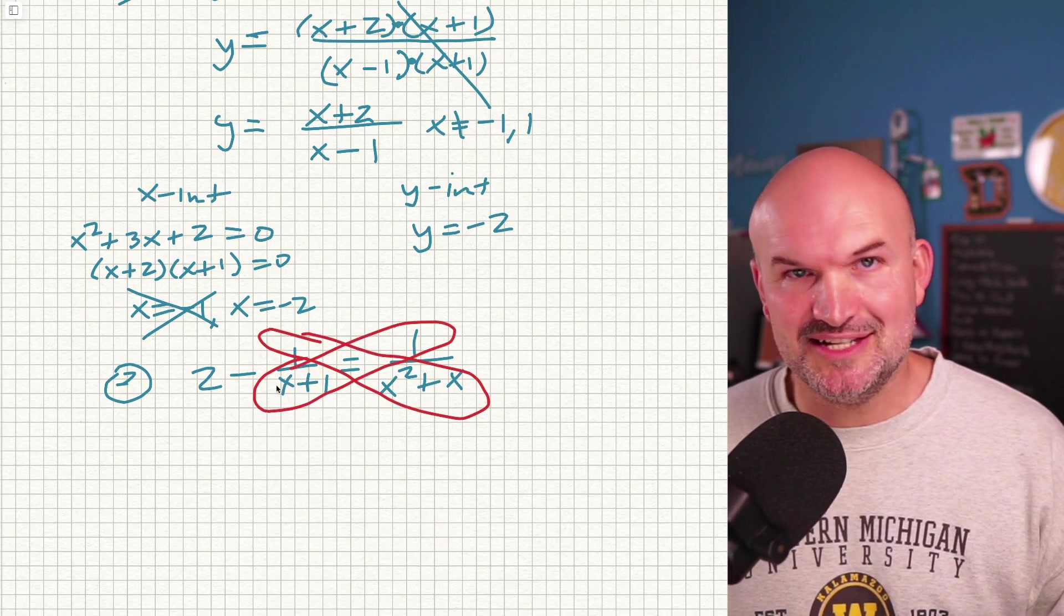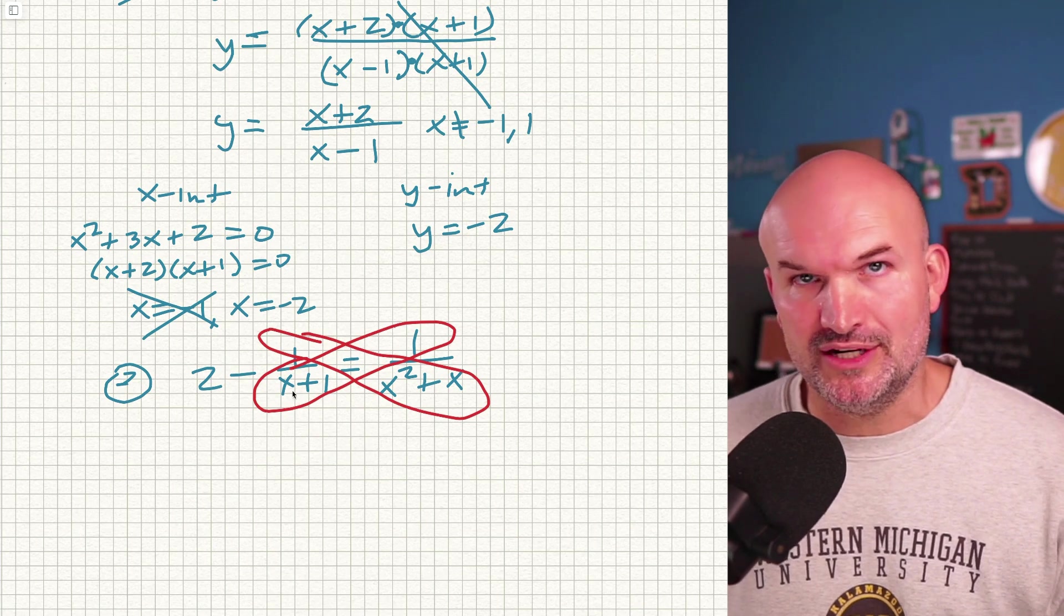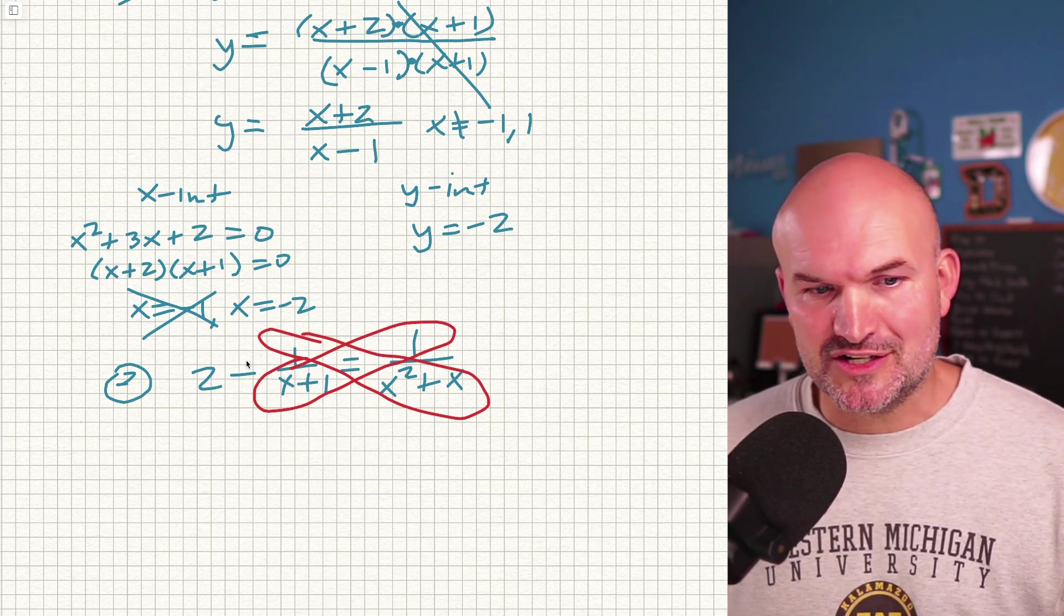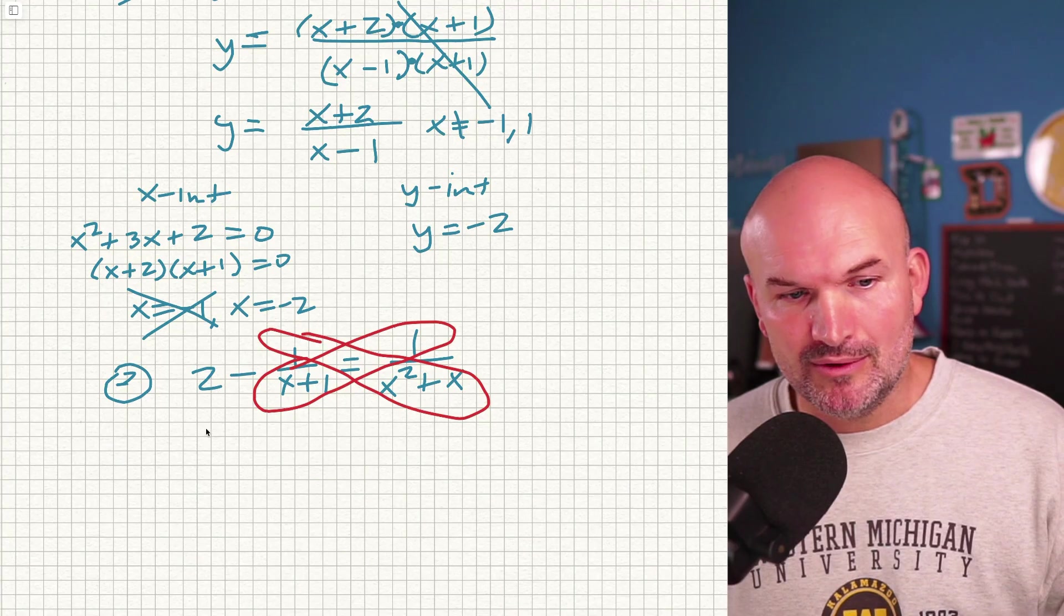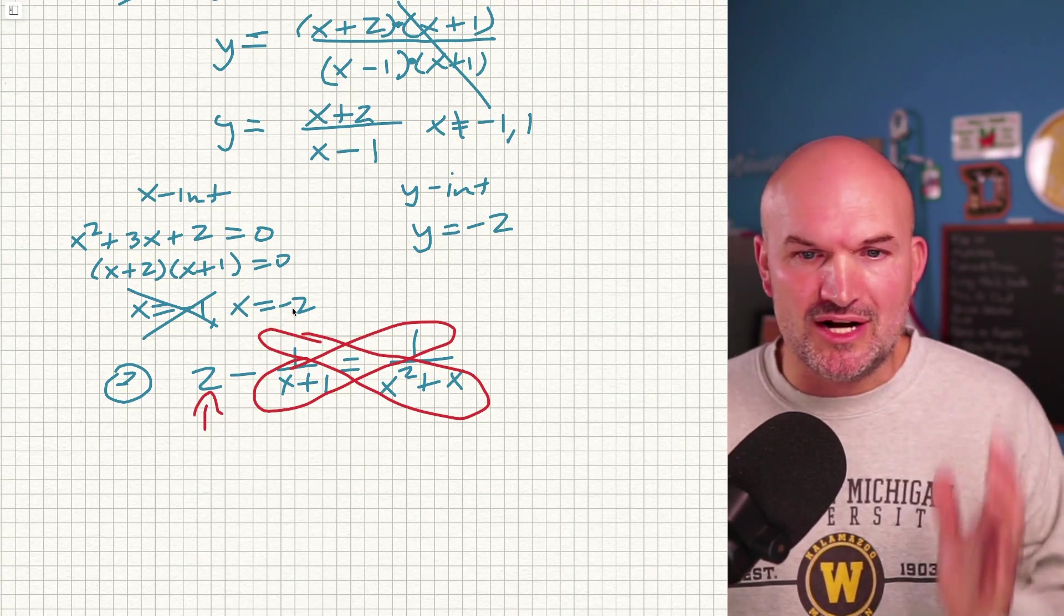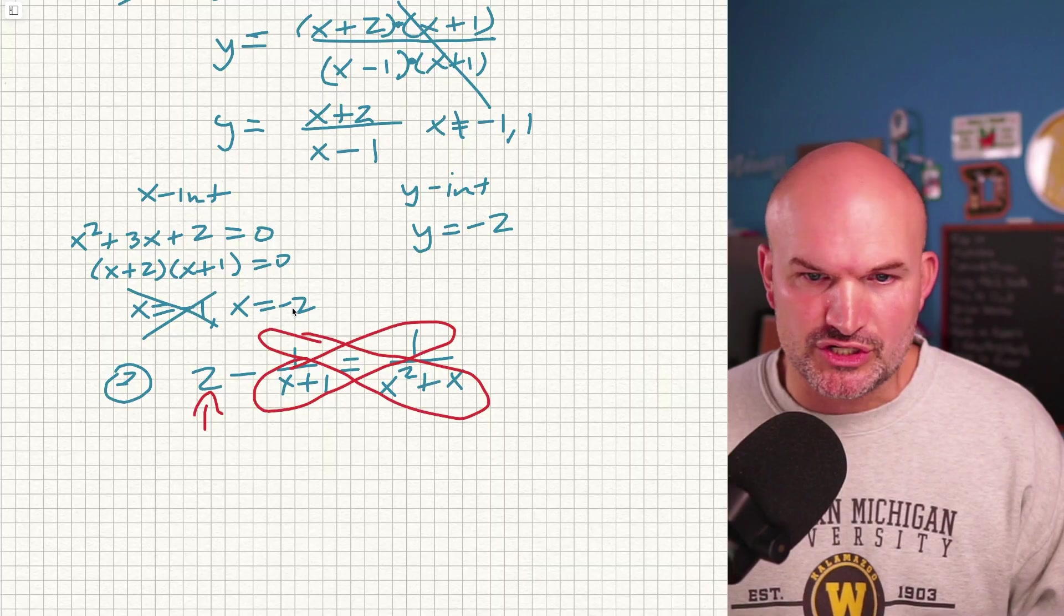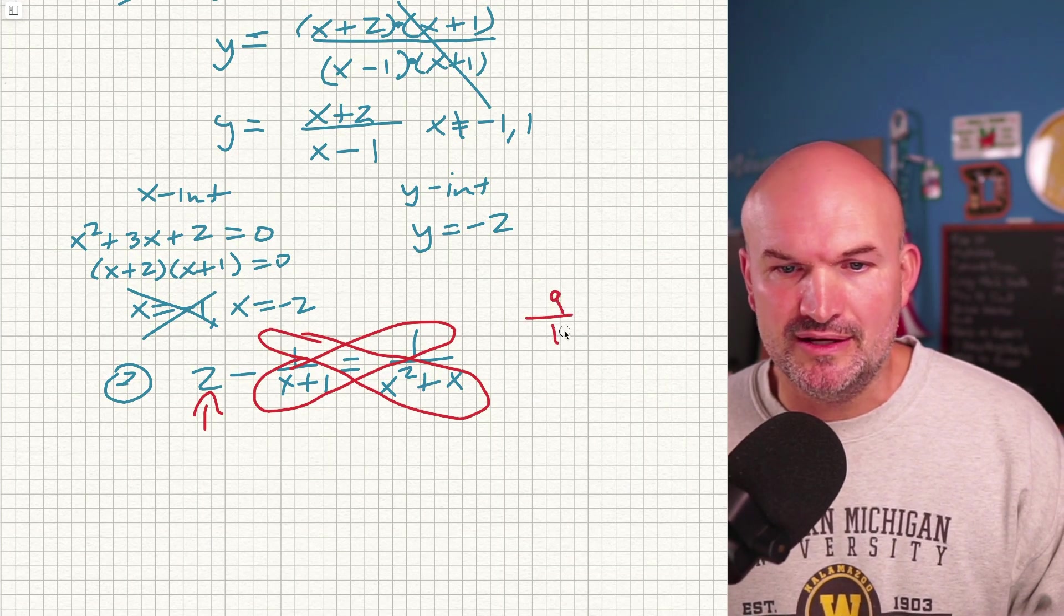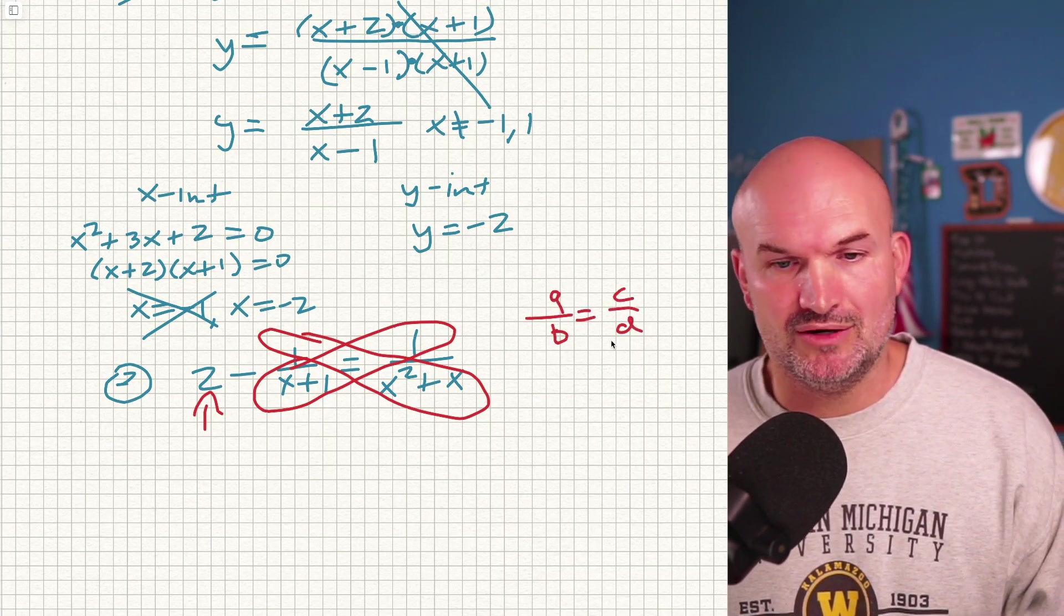And the problem with that is we don't have what we call a proportion. Yes, a fraction is equal to a fraction, but that fraction is being subtracted from two, right? So we cannot apply the cross product. You can only apply the cross product, ladies and gentlemen, when you have a proportion. That means a fraction over a fraction.